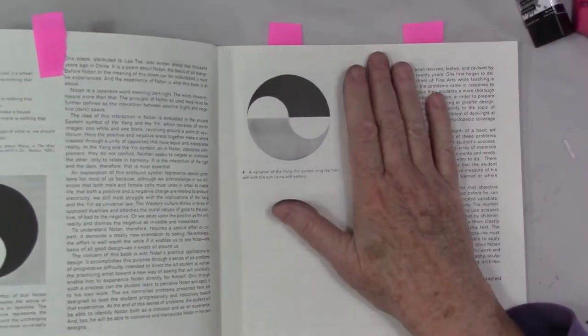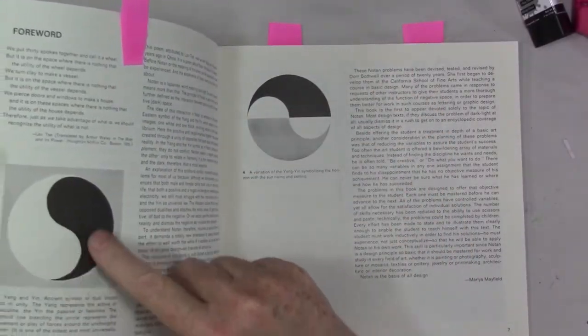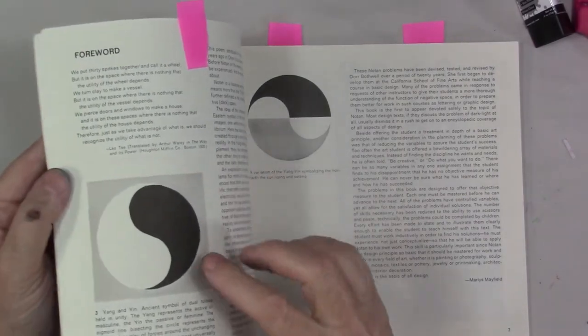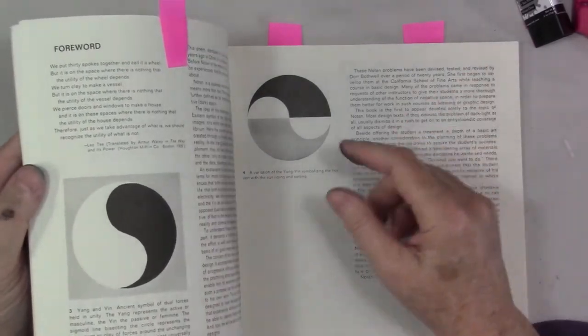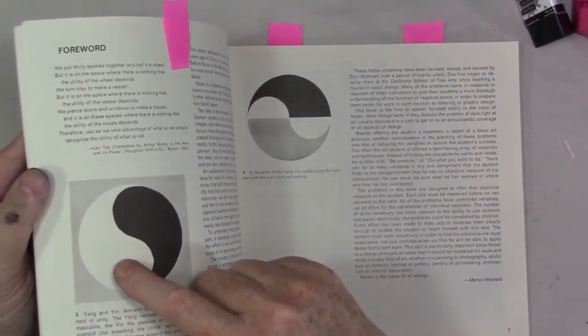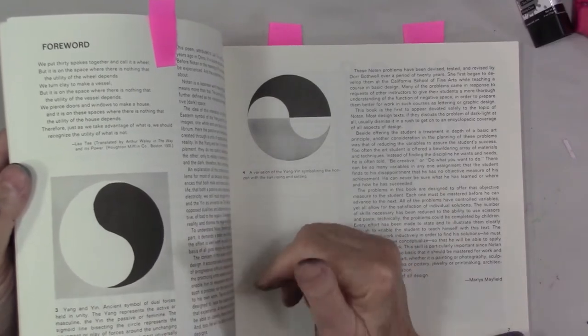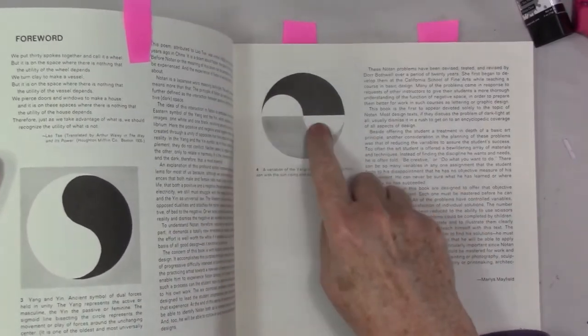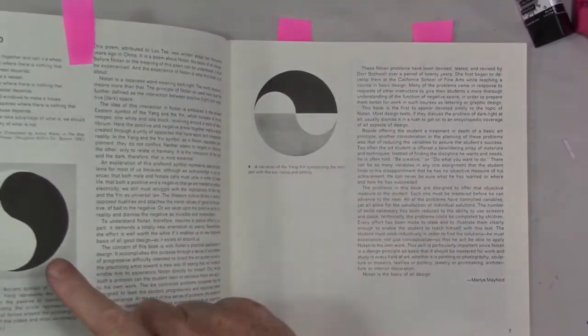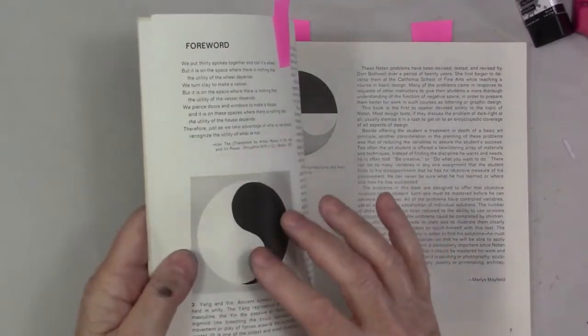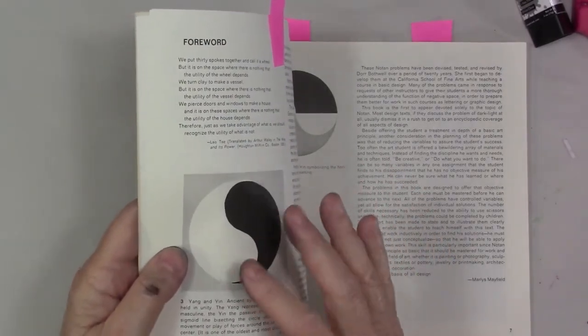And the same is true with black and white design in that the black is very dependent on the white space. So that's something that is sometimes a little hard to keep in mind but is really how you work black and white together.